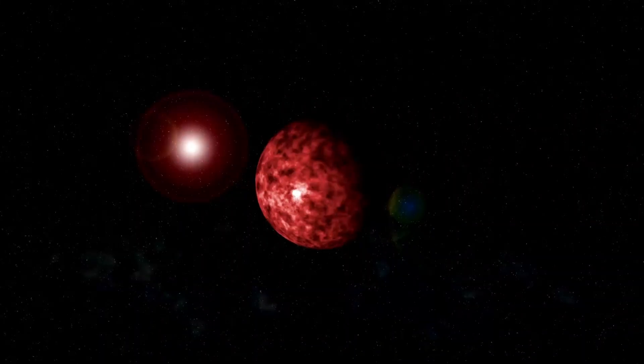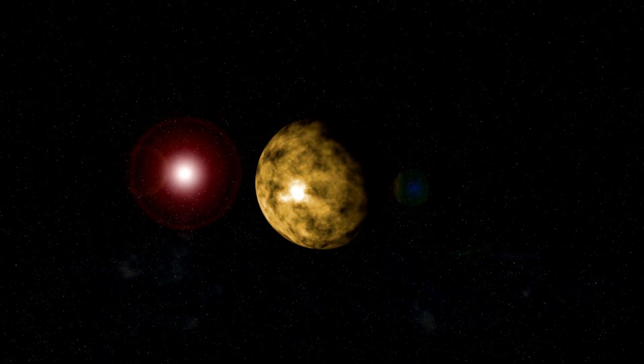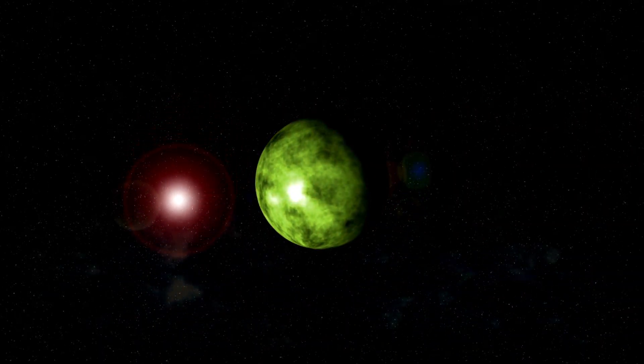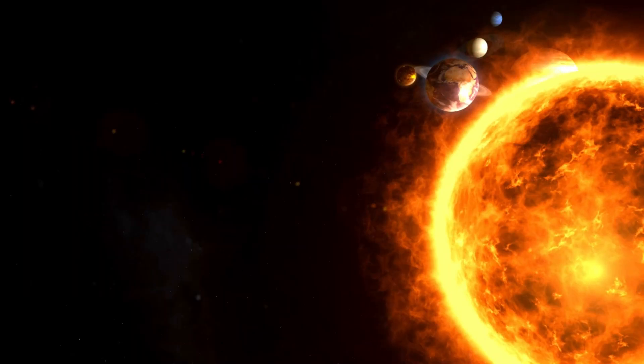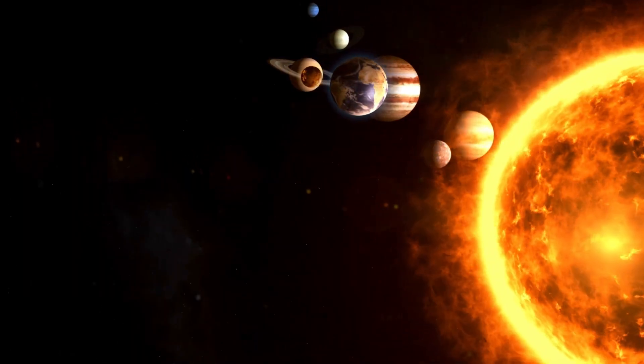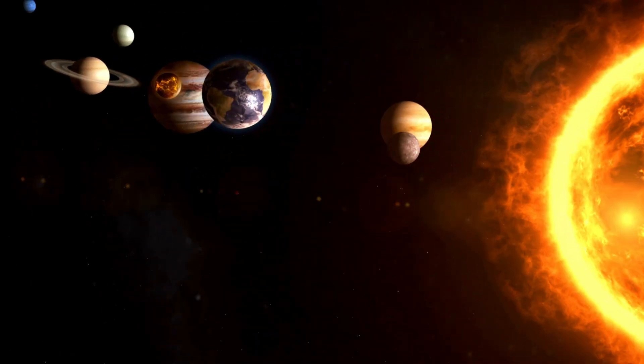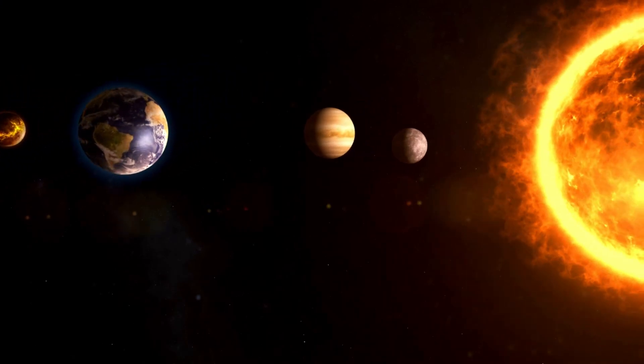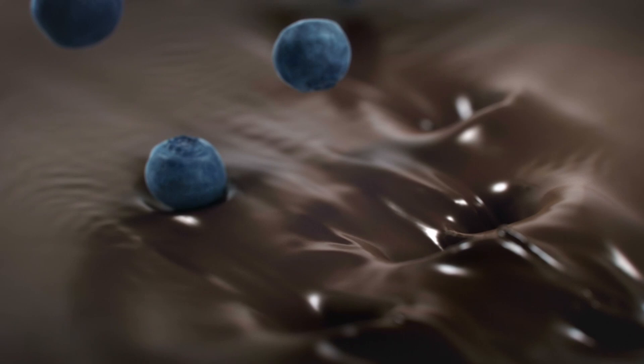Another possible scenario would involve Earth not only growing to the size of the Sun, but also gaining its mass. In this case, Earth would essentially transform into a second Sun, and the solar system would turn into a binary star system. This would also spell doom for our solar system.